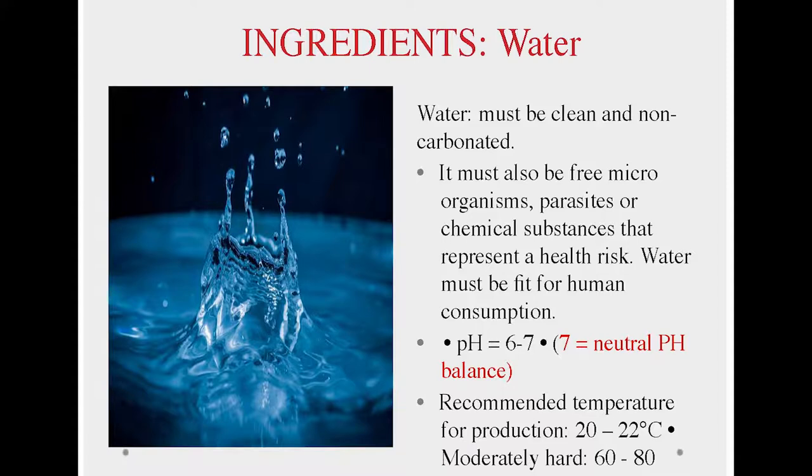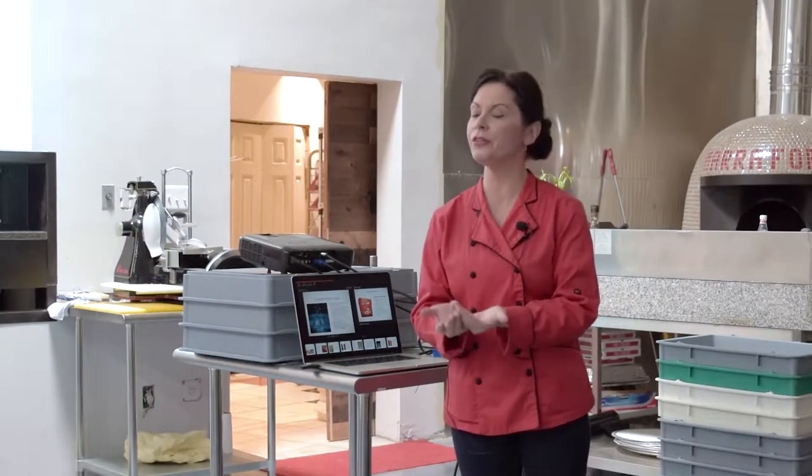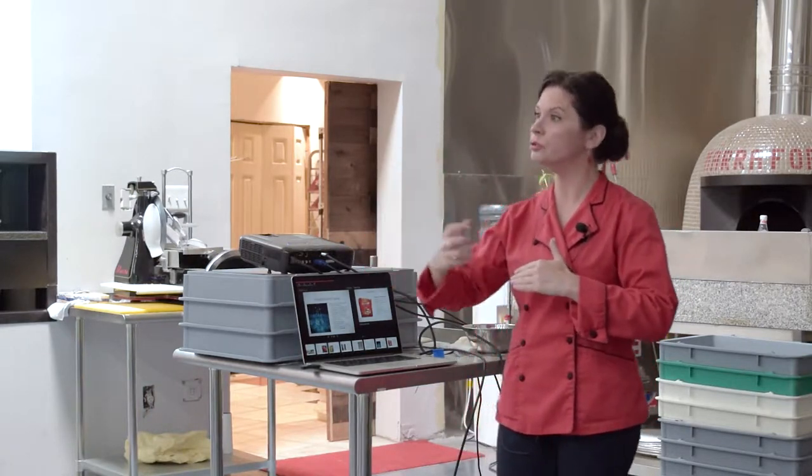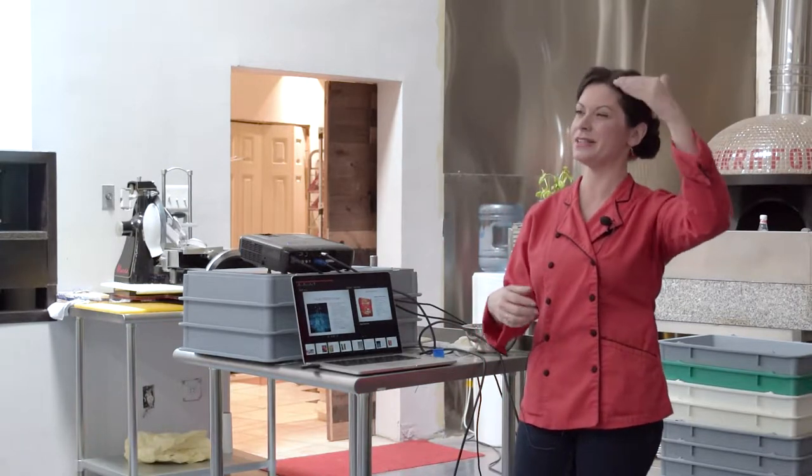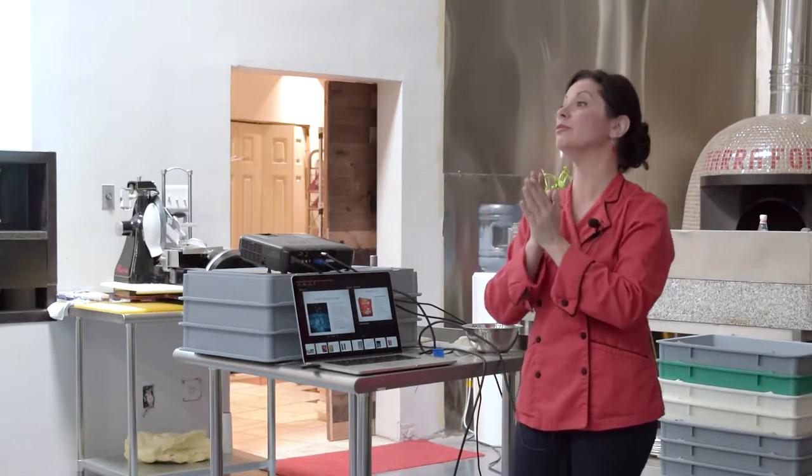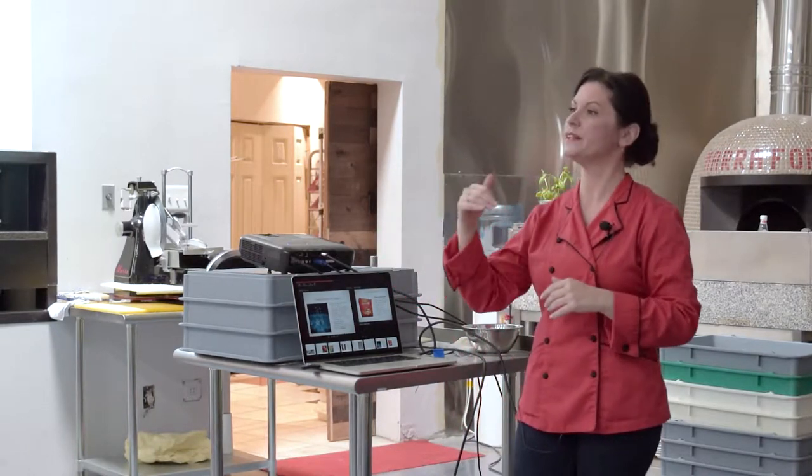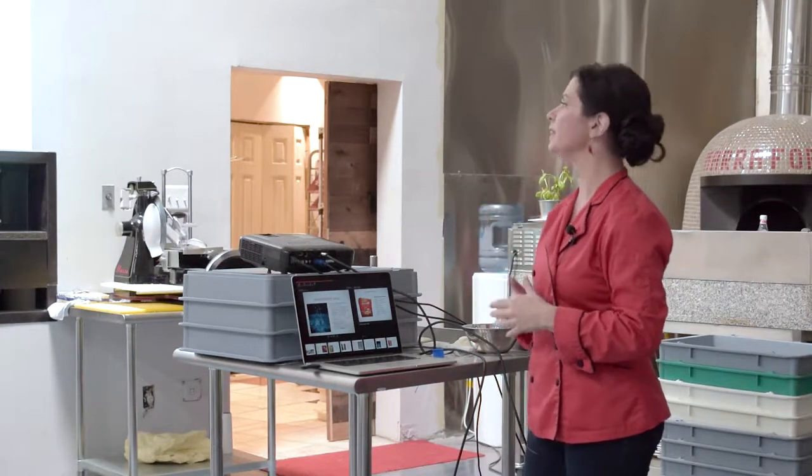Now, I teach a lot of culinary medicine classes, so we talk about food and how to heal the body. And one of the things we can tell when people aren't healthy is their body will have a high acidic state. So like fried foods, meats, alcohol, those things really give us a higher acidic level in our blood, and it's not what we want. We want to try to have neutral. So if we already start out with a water that's very close to neutral, that gives us a good base for the ingredients.